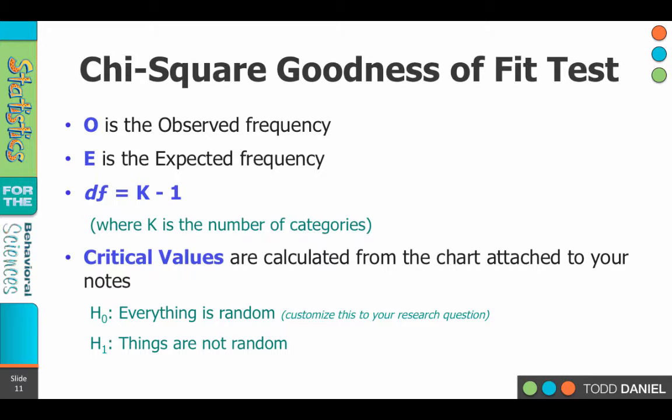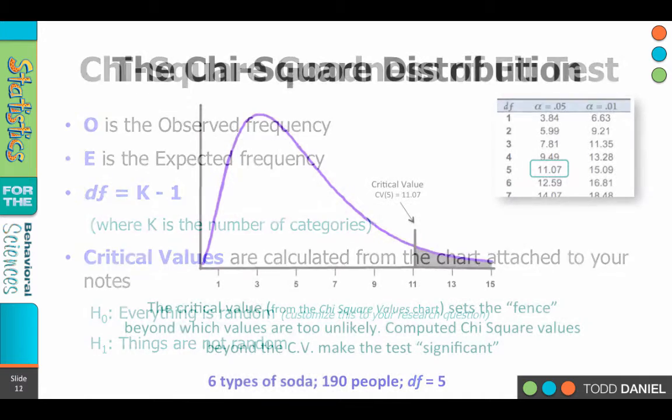The critical values are calculated from a chart attached to the back of your notes. We can look up the critical value for a certain chi-square test with an alpha of .05 and six categories or five degrees of freedom. The null hypothesis will be something like: preference for soda is random, or types of soda are chosen randomly — customize that to your research question. The alternative is just the same with a 'not' added: preference is not random. That will be our null and alternative hypothesis.